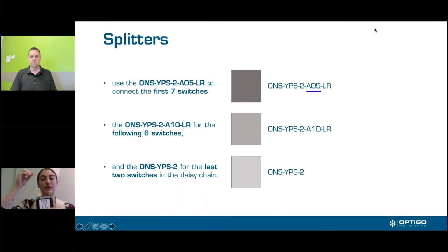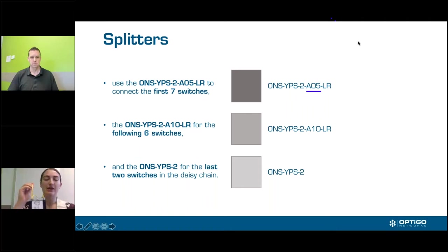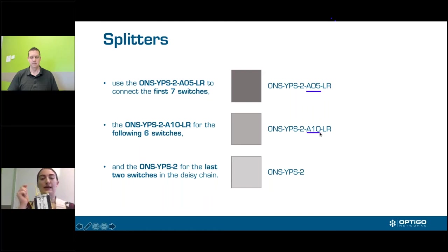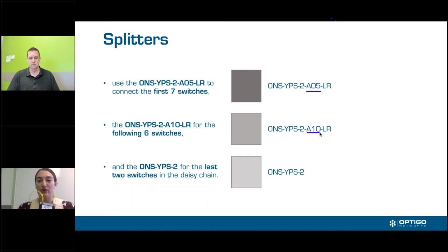At the next splitter, another 5% is split off from the remaining 95%, and 95% of that continues up — allowing way more bandwidth to travel much higher in the building. However, at some point the 95% that continues won't be enough, and we'll have to start using an A10 splitter, which splits 10% of the light off and keeps 90% continuing up the trunk. There is a maximum of seven A05 splitters and six A10 splitters — after that the trunk won't have enough light to keep a switch going. The very last split at the top is a 50/50 YPS2 splitter.